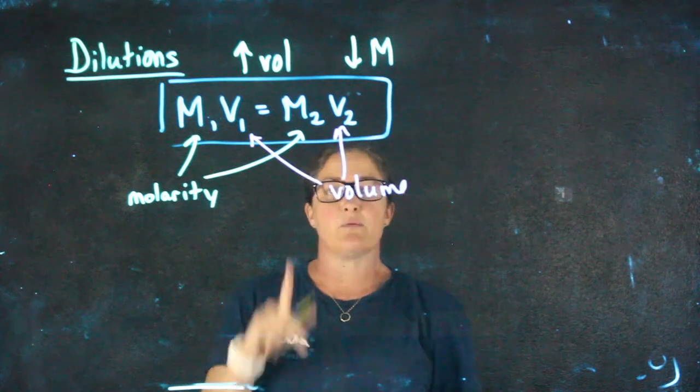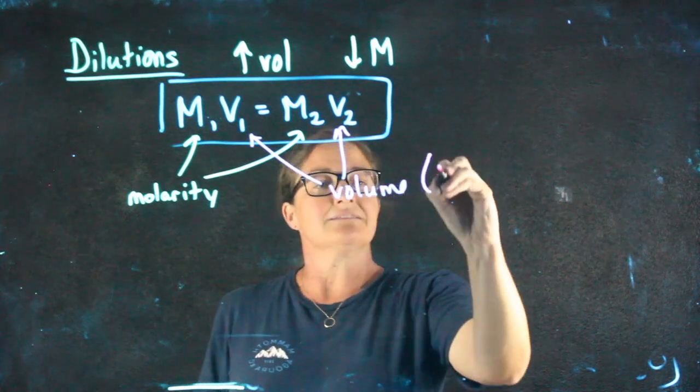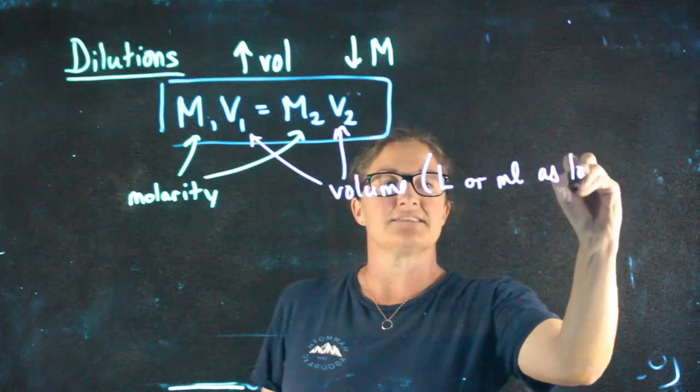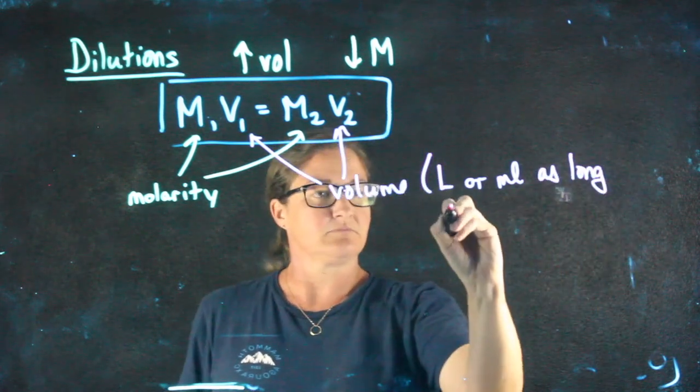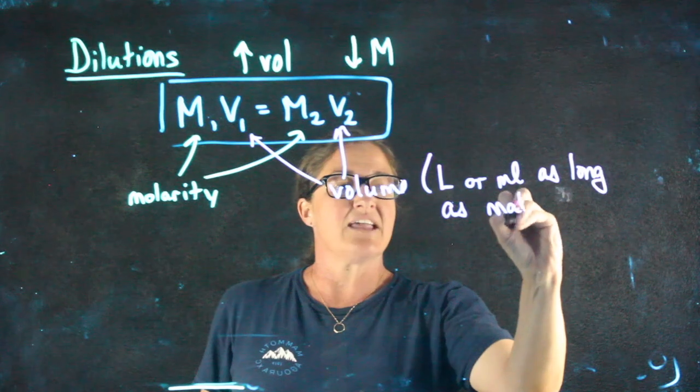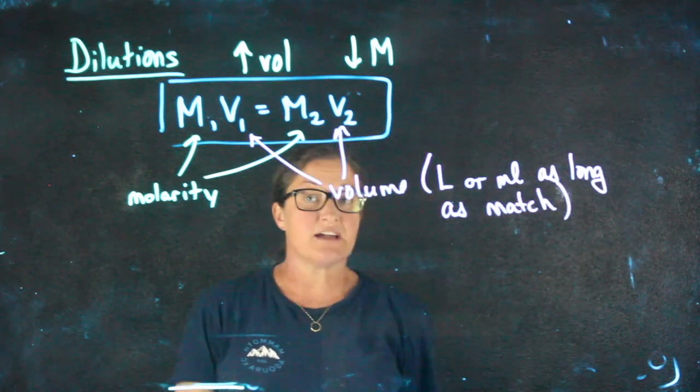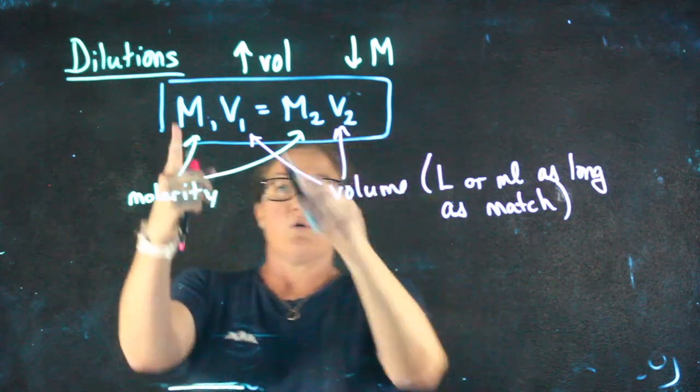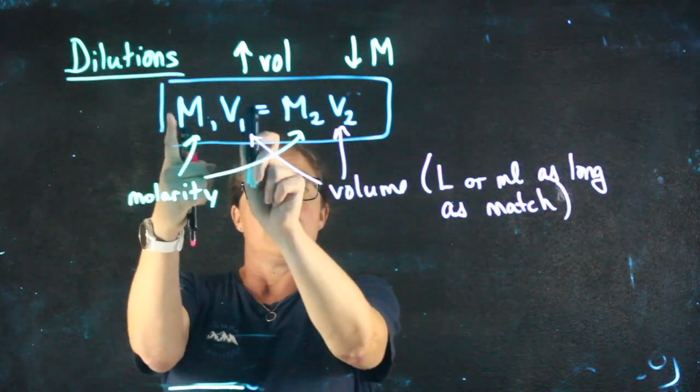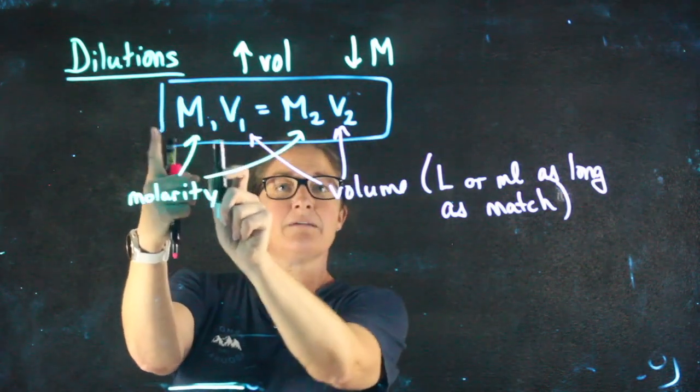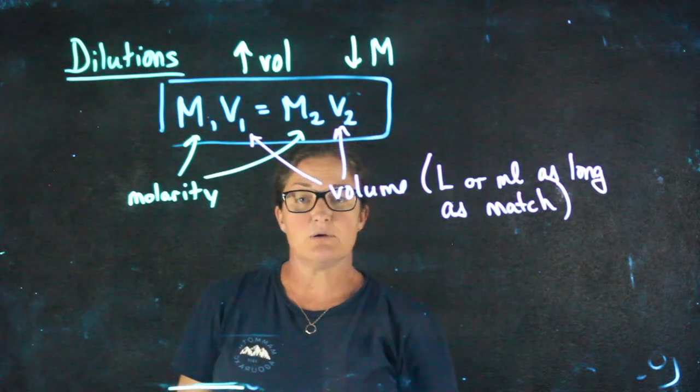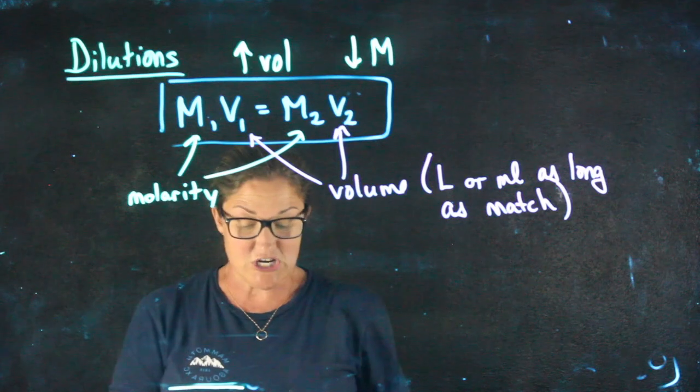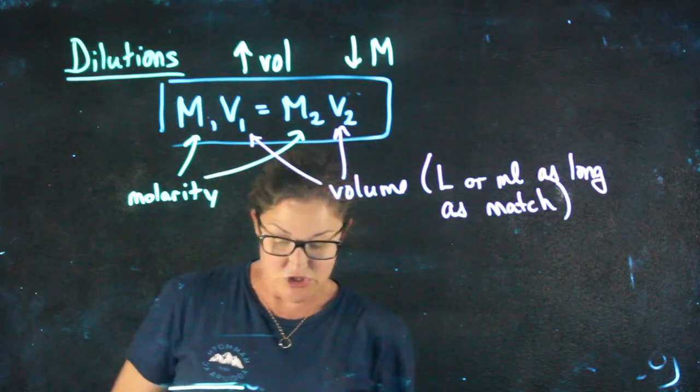And with this formula, when using volume, it can be in liters or milliliters as long as it's the same on both sides. That is, as long as the units match on both sides of the equation, we can use any units we want. So V1 and M1 are going to be starting. M2 and V2 are going to be the final concentration of the solution and the final volume of the solution.